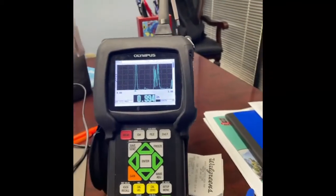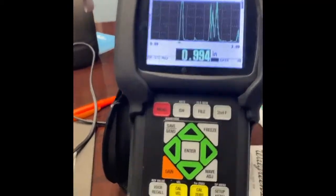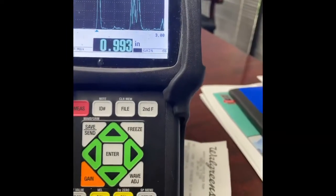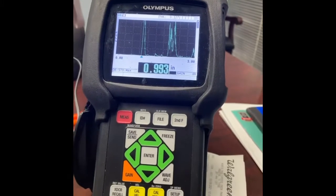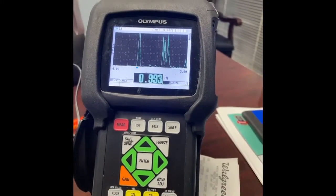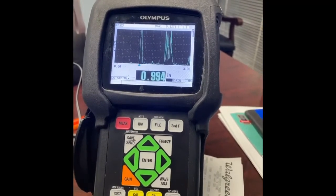It's showing that I'm at about 0.94. I've got it on a 3-inch range, right? And we want to make sure which particular echo we're reading from.